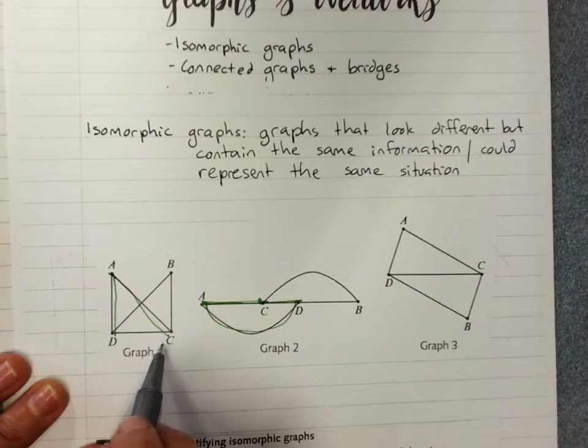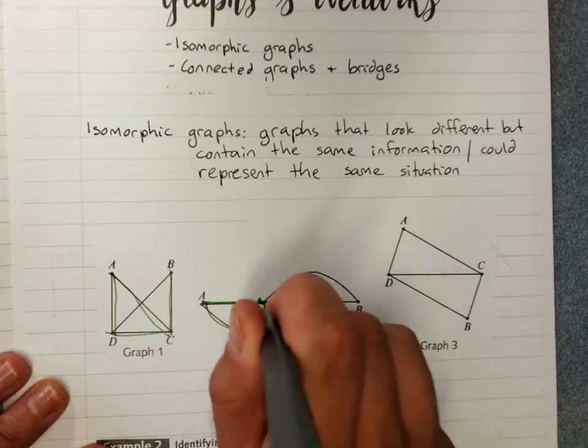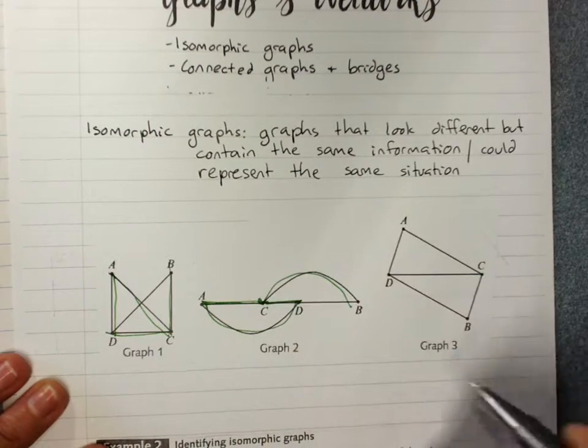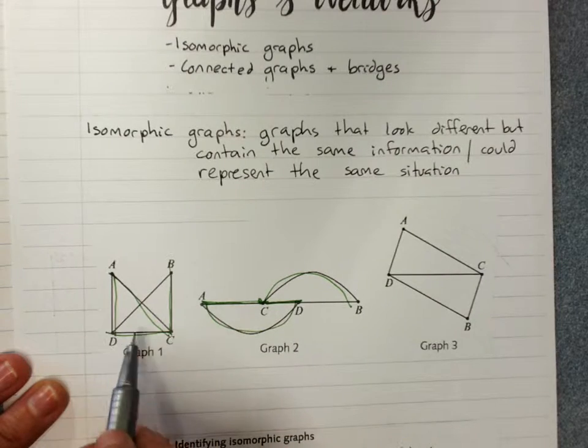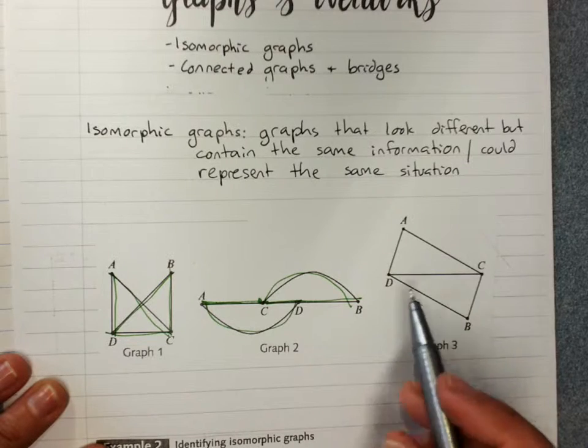C is connected to A but also B and D. D, B. D is connected to the two that we said but also to B. D is also connected to B. Same here.